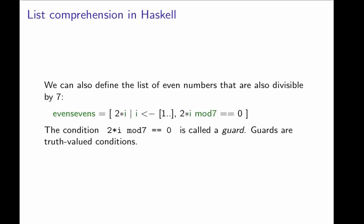This specifies the universe from which the elements of the list must be taken. Well, we can also define the list of even numbers that are also divisible by seven. And this list of even sevens is defined as the list of elements that are of the form 2 times i, where i is taken from this universe. So this is our generator. But where 2 times i modulo 7 is equal to 0, this is not a generator. This is a condition that must be satisfied. And this condition is called a guard.